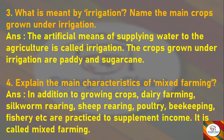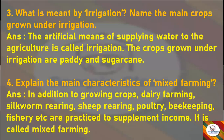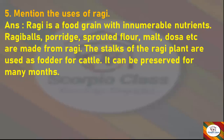Fourth question: Explain the main characteristics of mixed farming. Answer: In addition to growing crops, dairy farming, silkworm rearing, sheep rearing, poultry, beekeeping, and fishery are practiced to supplement income. This is called mixed farming.